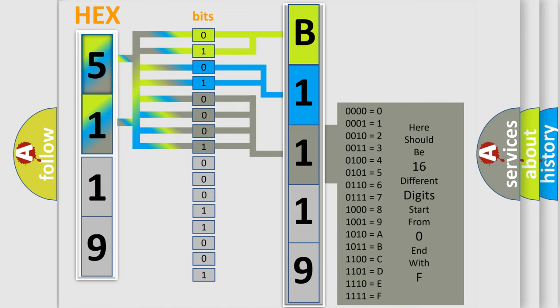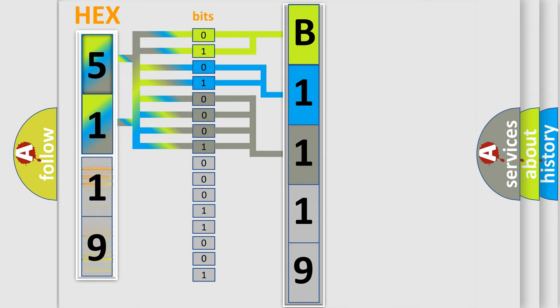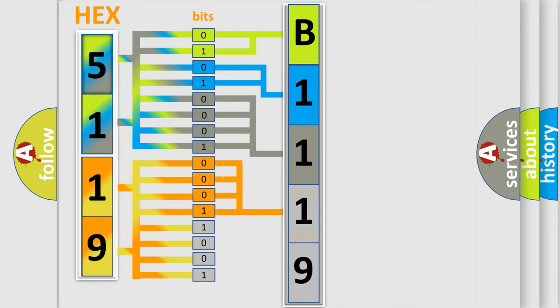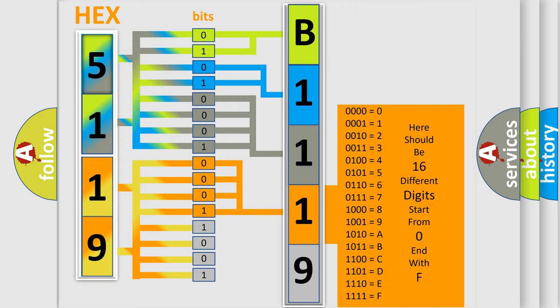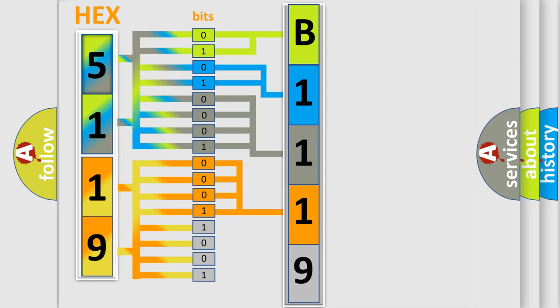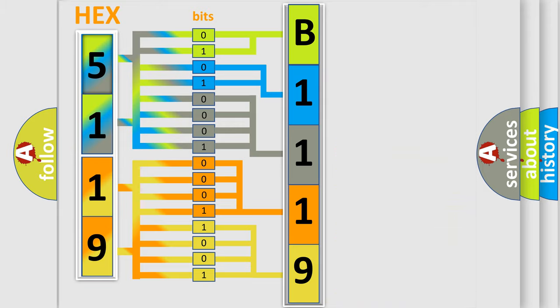The second byte is composed of a combination of eight bits. The first four bits determine the fourth character of the code, and the combination of the last four bits defines the fifth character. A single byte conceals 256 possible combinations.